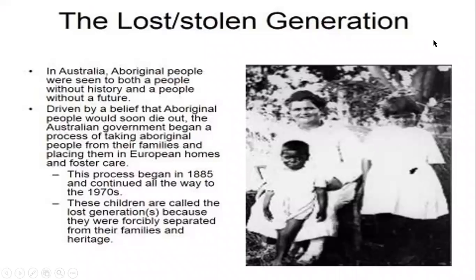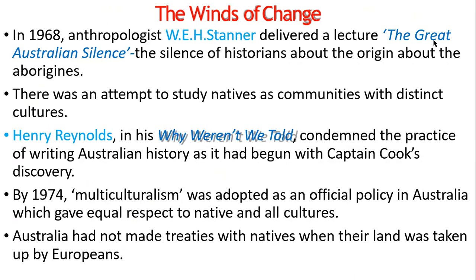In Australia, the Aboriginal people were seen as both a people without history and a people without a future. Driven by the belief that Aboriginal people would die out soon, the Australian government began a process of taking Aboriginal people from their families and placing them in European homes and foster care so that they could survive. This process began in 1885 and continued all the way until 1970. These children are called the Lost Generation because they were forcibly separated from their families and heritage.